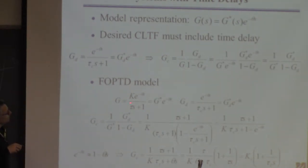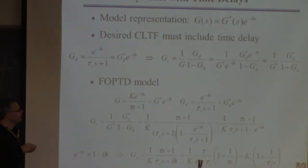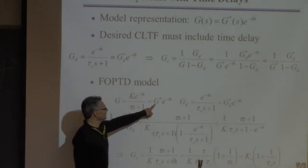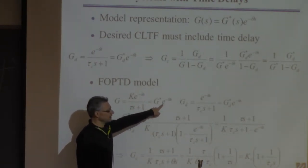So here's the G. Let's say we want to design a controller using this idea, first order plus time delay model. Here's our G: gain, time constant theta. Factor that into this form, which is convenient for us—the part without the delay times the delay.